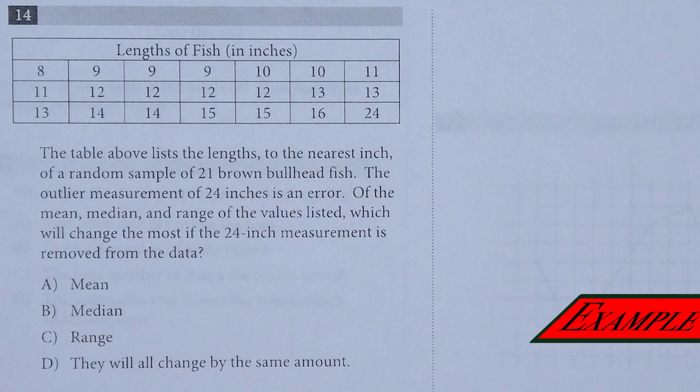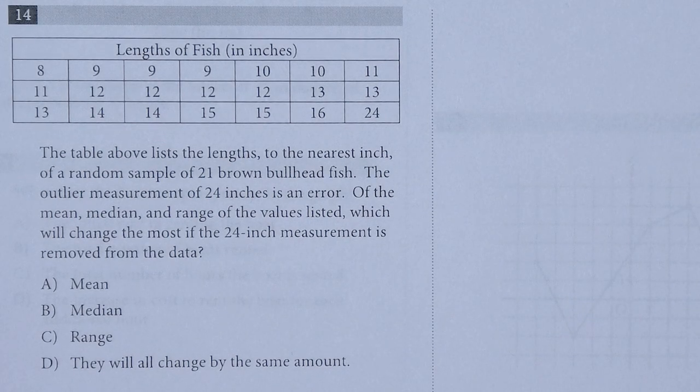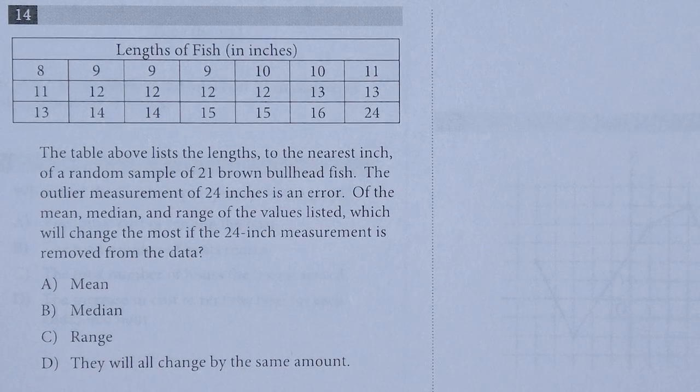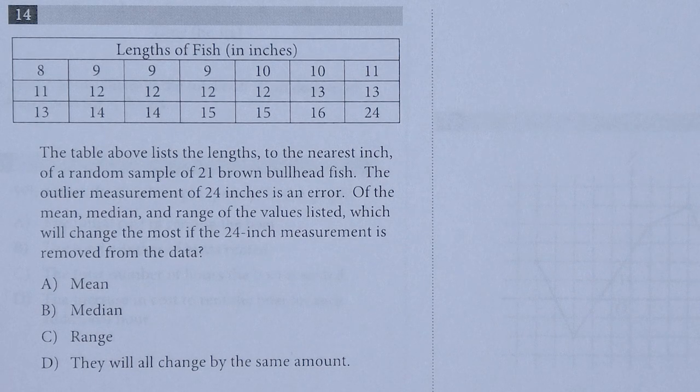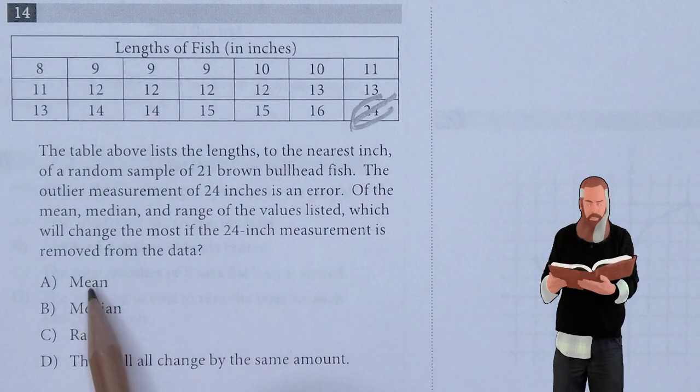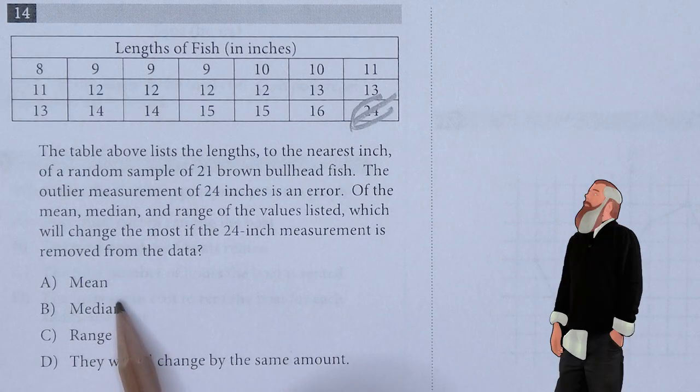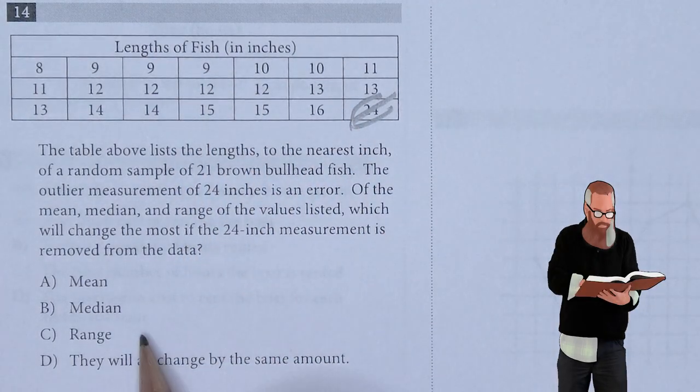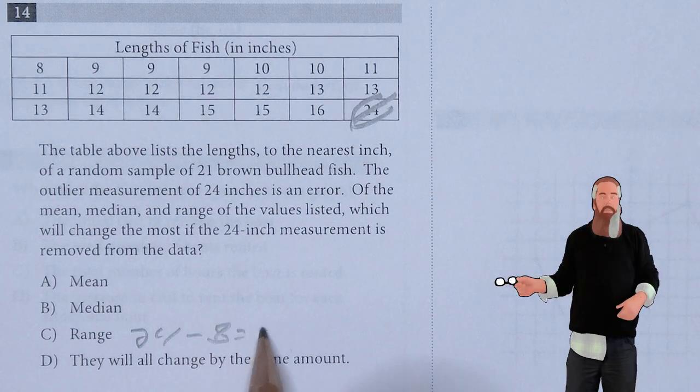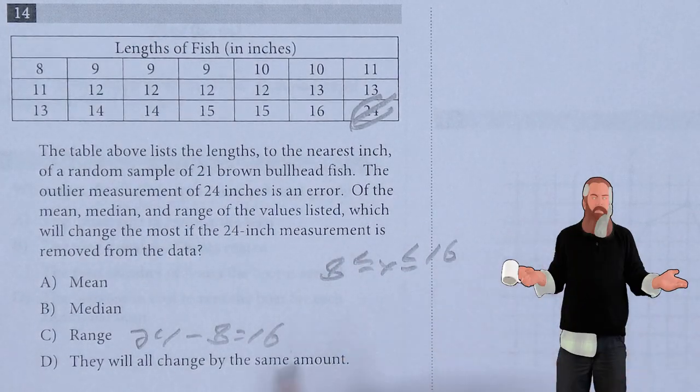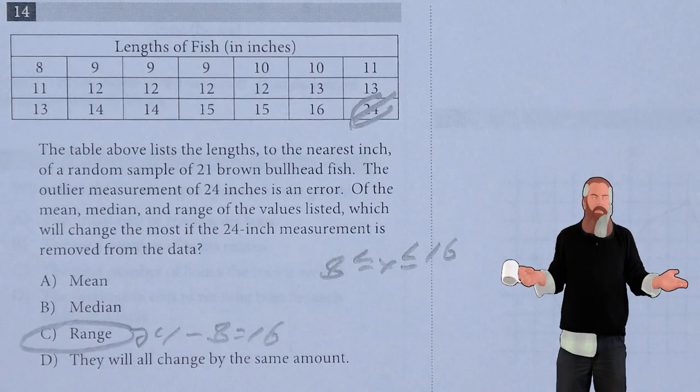The table above lists the lengths to the nearest inch of random samples of 21 brown bullhead fish. The outlier measure of 24 inches is an error. Of the mean, median and range of the values listed, which will change the most if the 24 inch measurement is removed from the data? If I removed just this one number, the average will change some and the median might change, but there's a whole bunch of 12s in the middle. But the range would have gone from 24 minus 8 is 16. Everything else is between 8 and 16. So the range would have the largest amount of change.